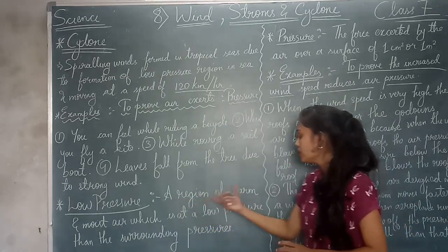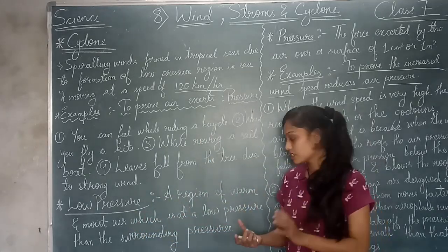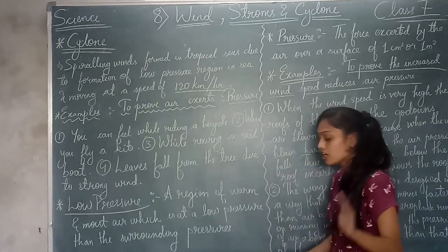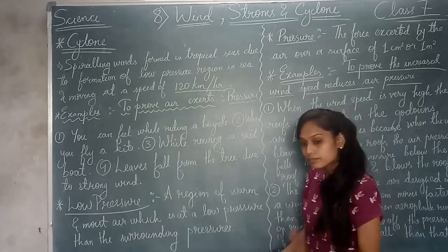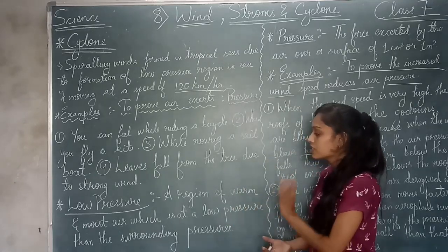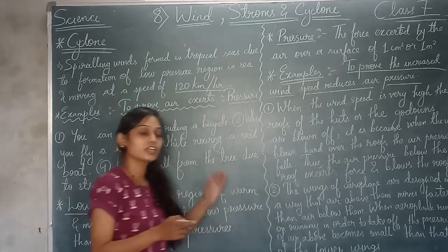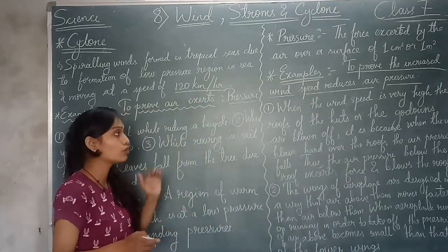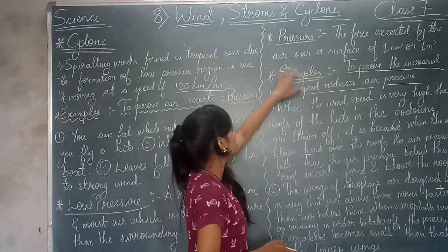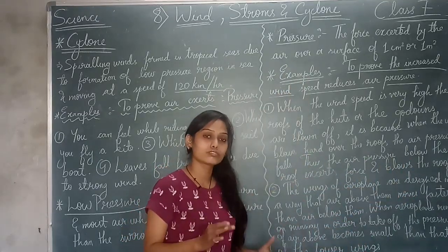What is low pressure? A region of warm and moist air which has low pressure — meaning the pressure is lower compared to the surrounding pressure — is known as a low pressure region. What is pressure? The force exerted by air is known as pressure.